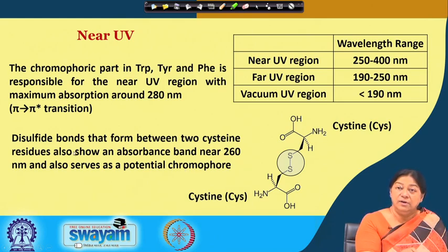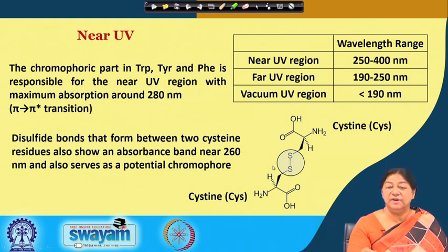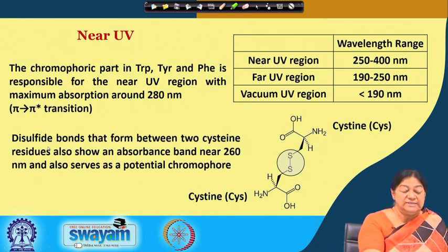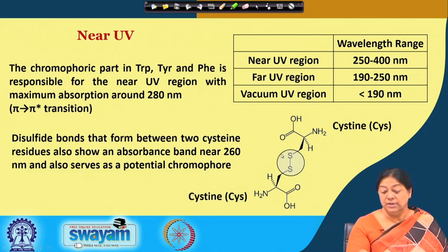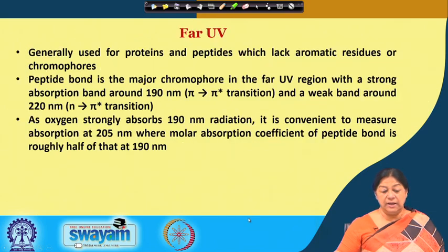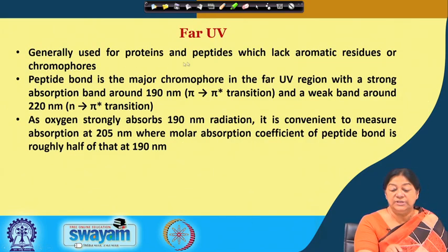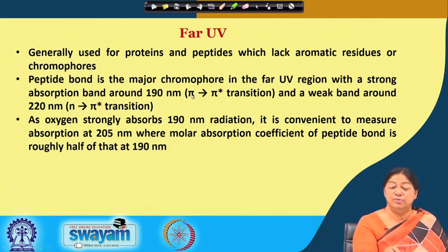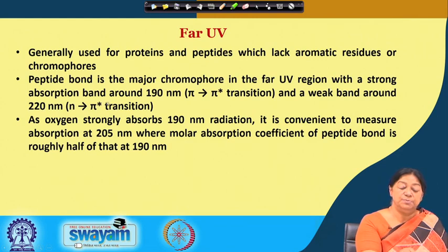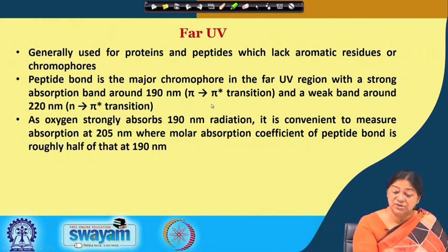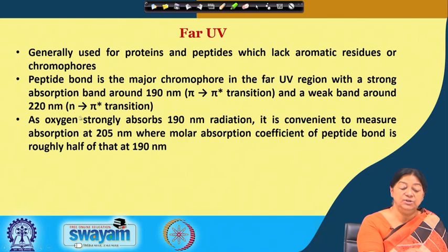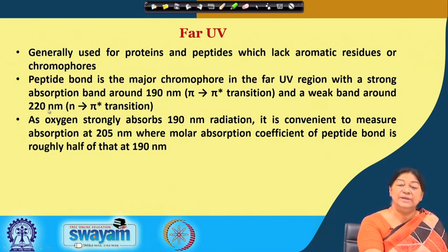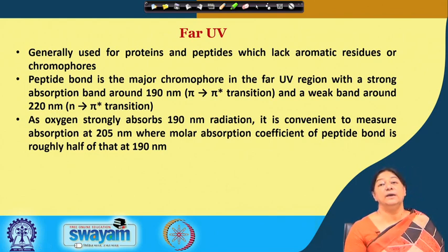Another potential chromophore is the disulfide linkage between two cysteine residues, called a disulfide bond. The far UV region is generally used for proteins and peptides that lack aromatic residues. In this region, the peptide bond is the major chromophore, with a strong absorption band around 190 nanometers corresponding to the pi to pi-star transition and a weak band around 220 nanometers corresponding to the N to pi-star transition. Since oxygen also absorbs around 190 nanometers, we use 220 nanometers when there are no aromatic amino acid residues present.